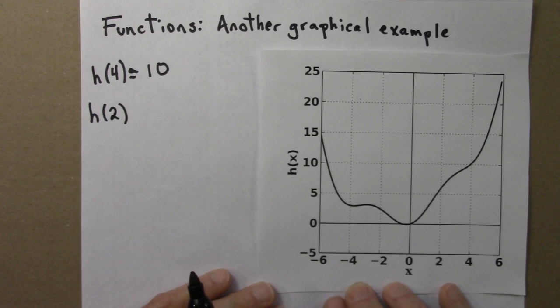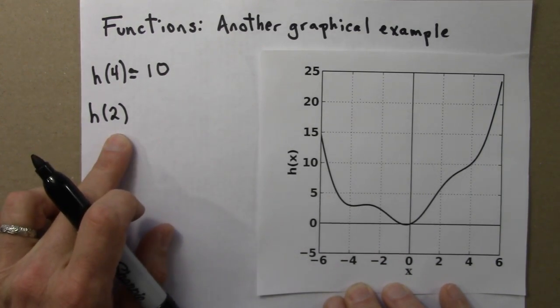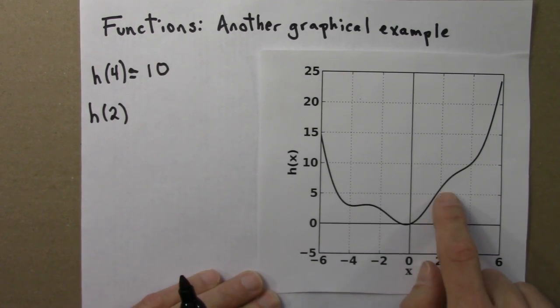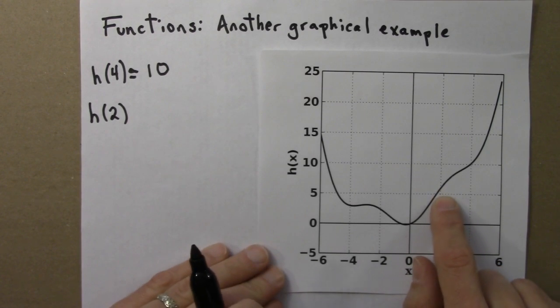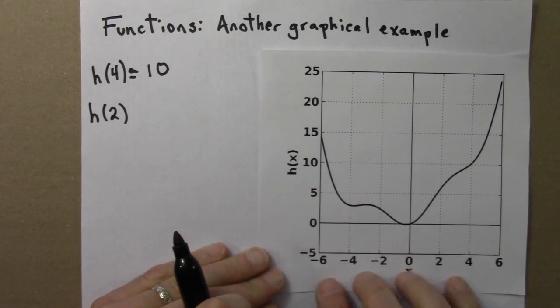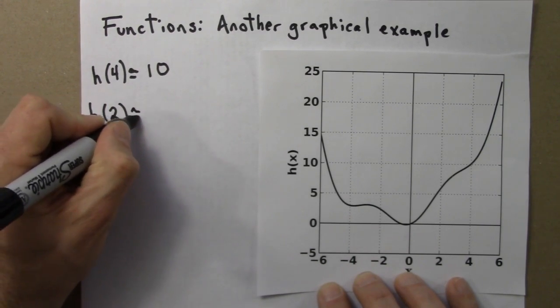h(2). So if 2 is the input, what is the function? Let's see. So here is my x value of 2. h(2) is the height of the curve. And I would look here at the curve and then read over here. And I would say, well, that's probably around 6. Again, it's just approximate, but that's okay.